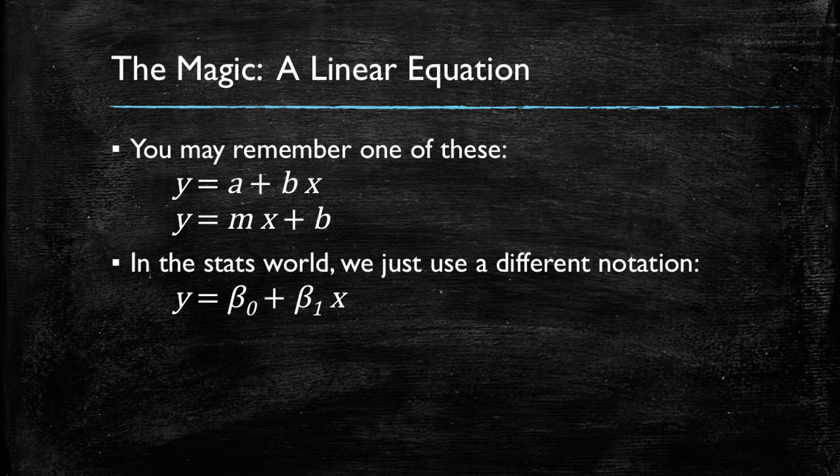Our linear equation is going to have a beta zero term, which we're going to be calling the intercept or the constant, and the beta one, which is the term that multiplies the x, and we're going to be calling the coefficient of x or the slope of x.